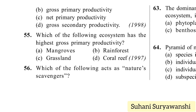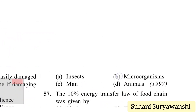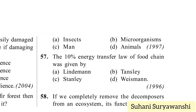Which ecosystem has the highest gross primary productivity? Options: mangroves, rainforest, grassland, or coral reef. Rainforest has the most trees, so it has the highest gross primary productivity. Which of the following acts as natural scavengers? Microorganisms act as natural scavengers. The 10% energy transfer law of the food chain was given by Lindemann.